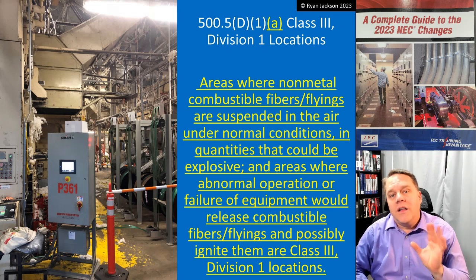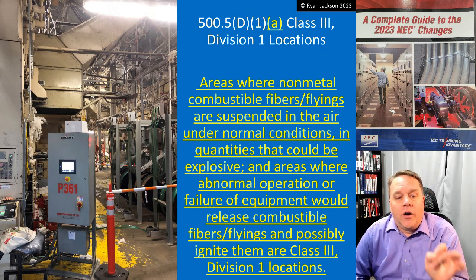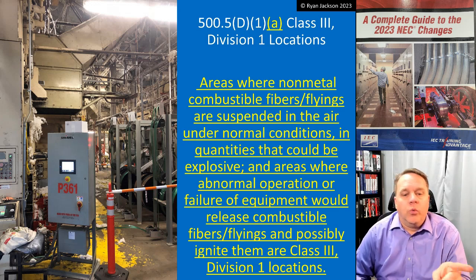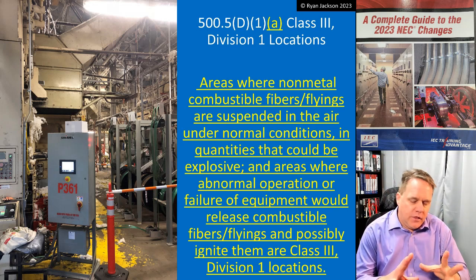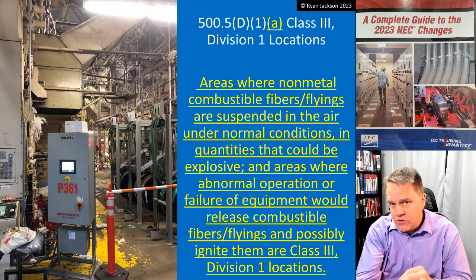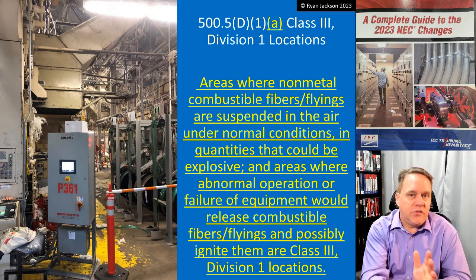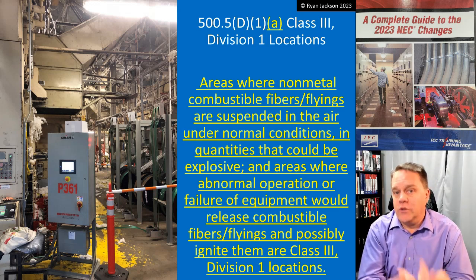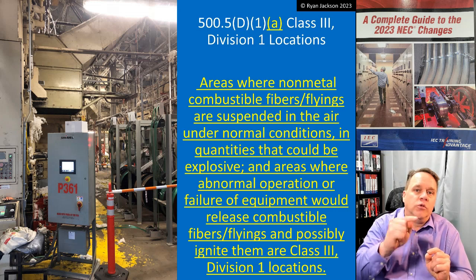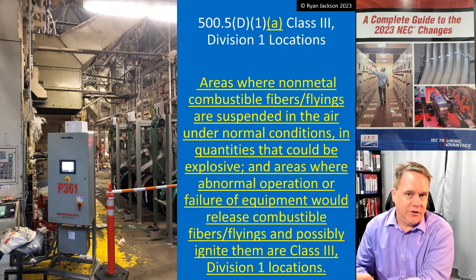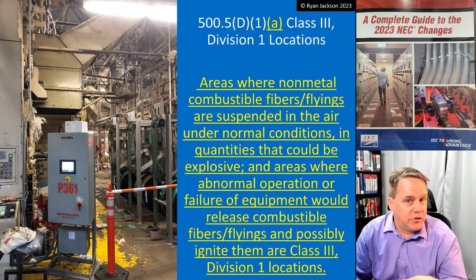We're also going to classify any area where abnormal operation or failure of equipment would both release fibers and flyings and ignite them. It's not enough that equipment breaking down would just release the ignitable or combustible fiber flying — if abnormal operation only releases the material, that's usually Division 2. If abnormal operation both releases and ignites the material, that's Division 1.